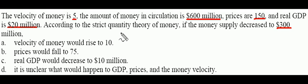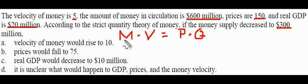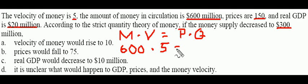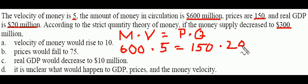Let's go ahead and write out the quantity theory of money exchange equation. It says that the stock of money M times the velocity of money V must be equal to P, the price level, times Q, the real GDP. We have figures for each of these variables: M, the money supply, is $600; V, the velocity of money, is 5; P, the price level, is $150; and Q, real GDP, is $20. We can see that this equation is indeed holding true — $600 times 5 is $3,000, and $150 times 20 is $3,000.